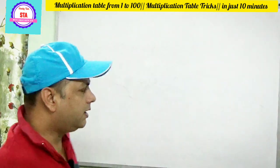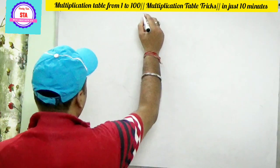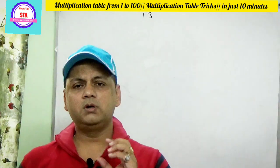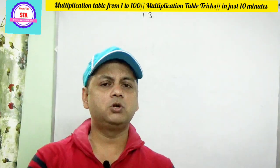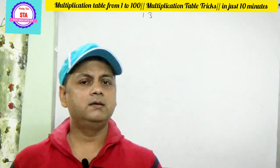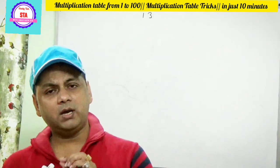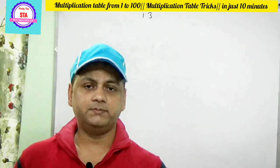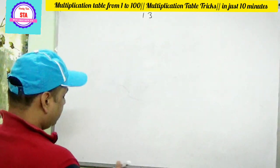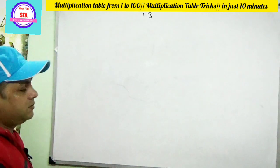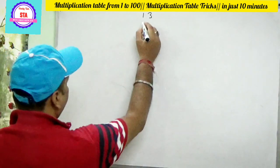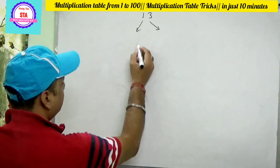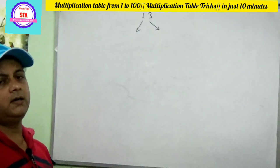Write down the table of 13. I hope all of you know the table from 1 to 9. If you know tables 1 to 9, then you can learn the table from 11 to 99. Write down the table of 13 by dividing it into two parts — first part: table of 1, and second part: table of 3.